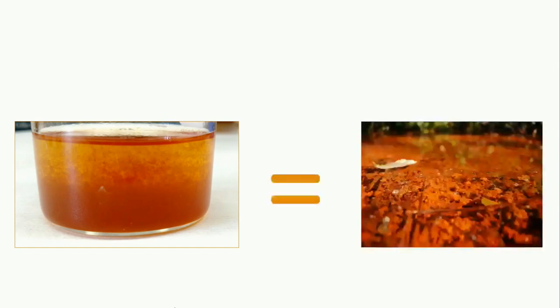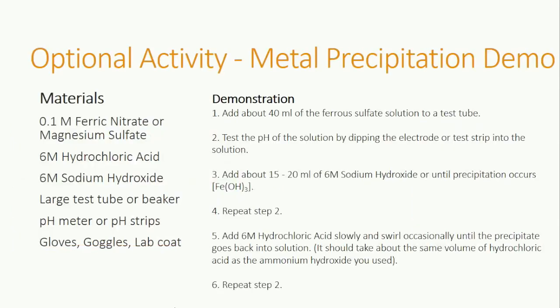Let's tie this experiment back to acid mine drainage streams. The precipitated metals you saw in the beaker are very similar to the metals you find in some streams affected by acid mine drainage. So when an acidic stream has a pH that is rising into the basic spectrum, metals precipitate out. Like we also saw in the experiment, metals in a stream can dissolve into water if the pH drops into the acidic range. Pause the video here to refer to the steps if you would like to complete the reaction on your own.